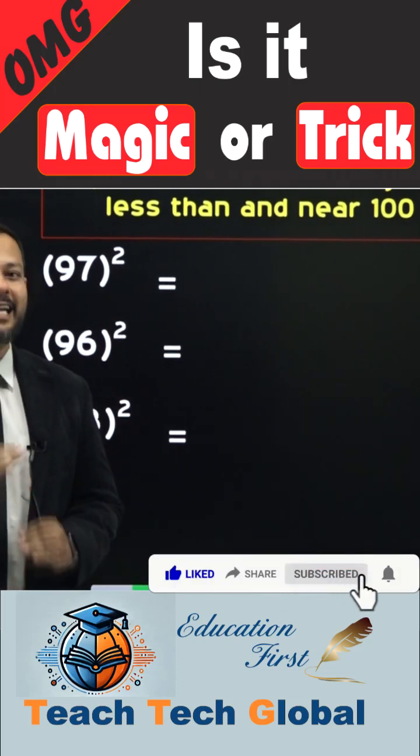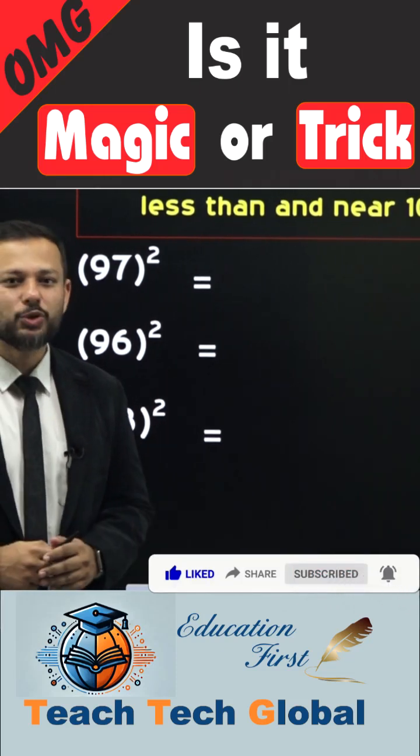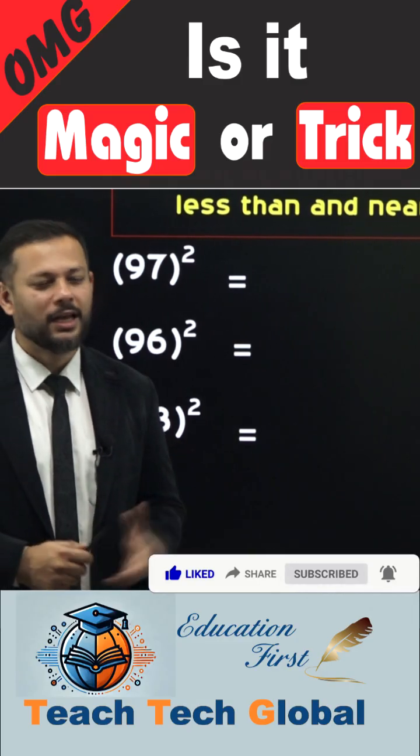Look at these numbers, slightly less than 100. Can we find their squares without using any calculator? Let's look at it.